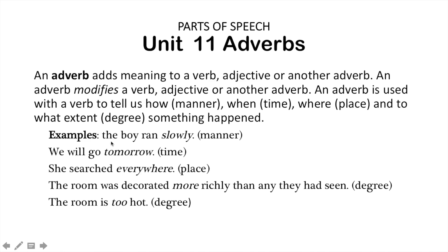The first example reads: 'The boy ran slowly.' This is manner. 'We will go tomorrow.' This describes when, so time. 'She searched everywhere.' This is looking at place. 'The room was decorated more richly than any they had seen.' So this is degree, and so is this last one: 'The room is too hot.'